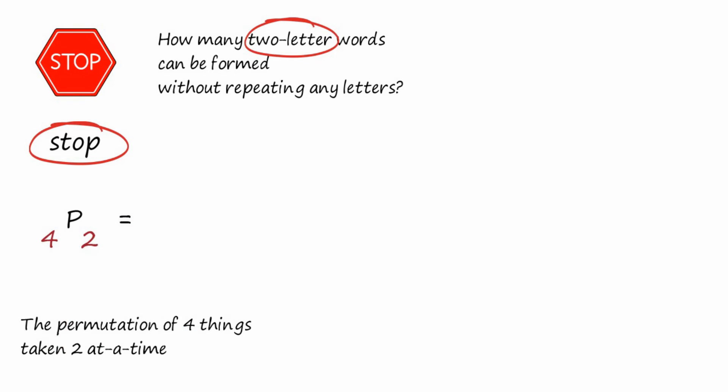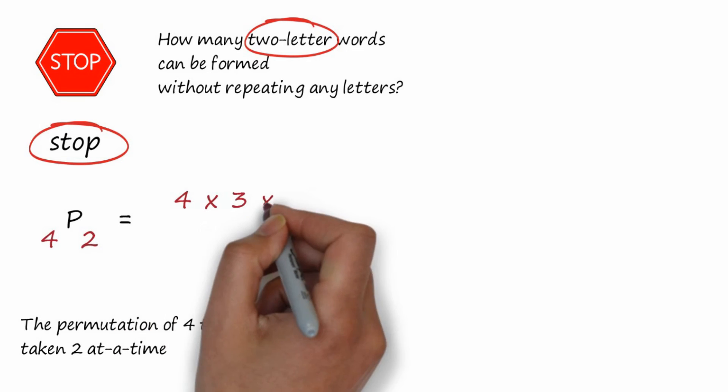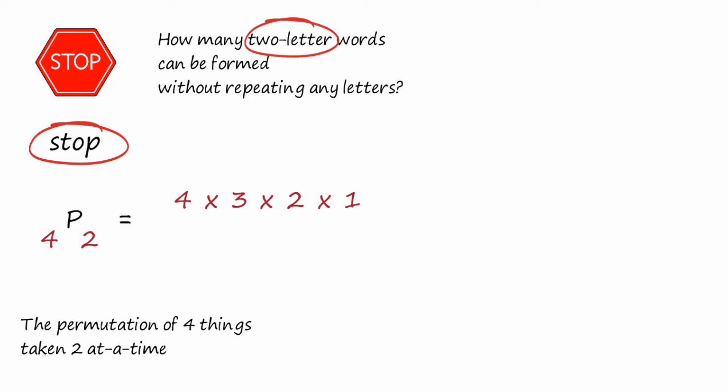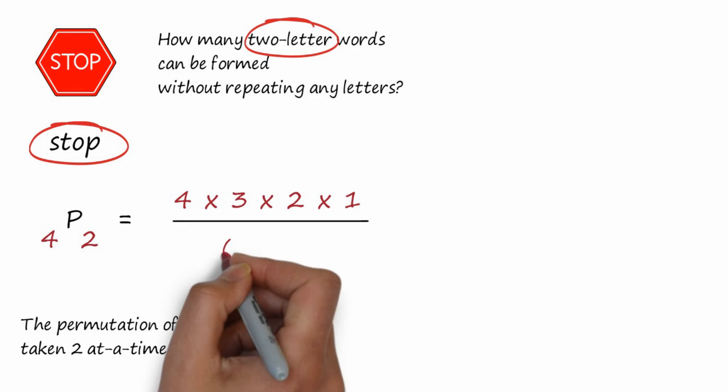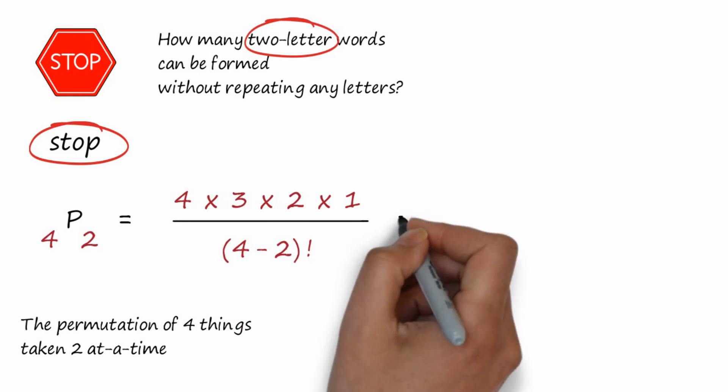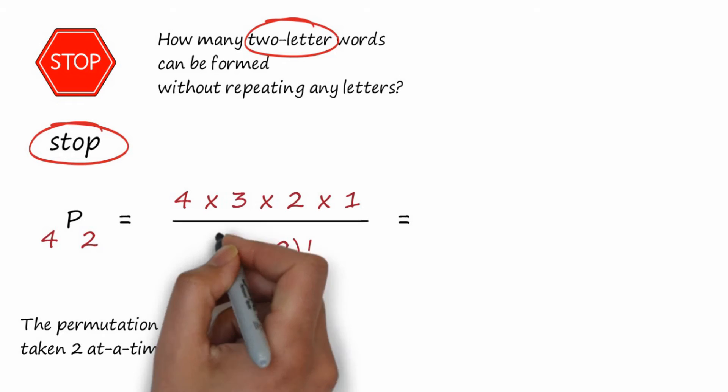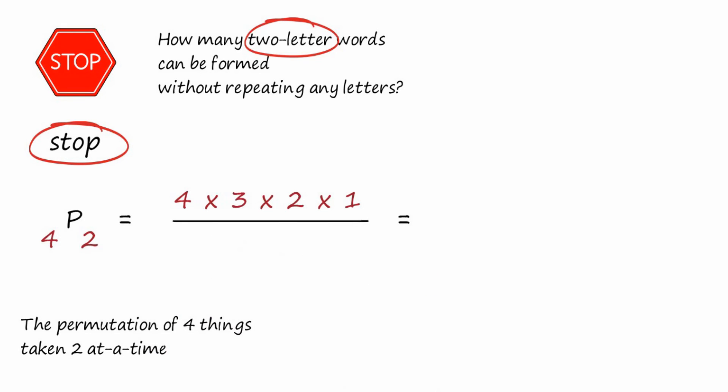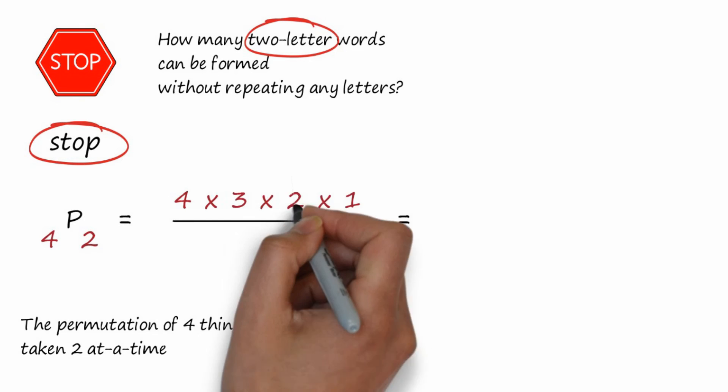And that equals N factorial is four factorial, four times three times two times one, divided by the difference, N minus R, in this case, four minus two factorial. And of course, four minus two factorial is two factorial, which is two times one, and we can divide out the twos.